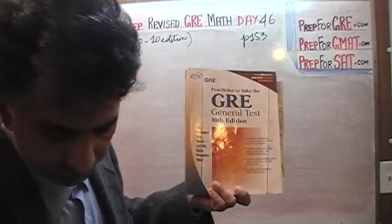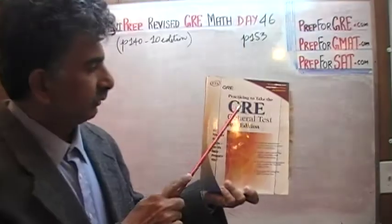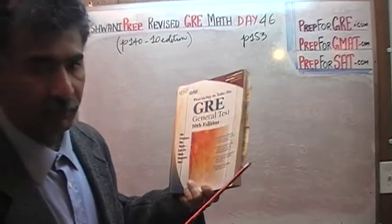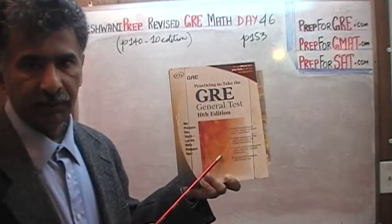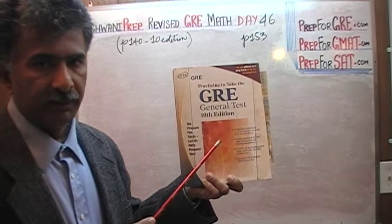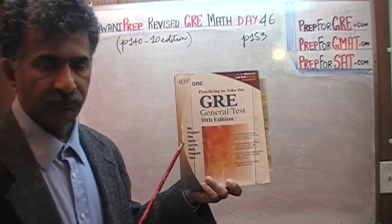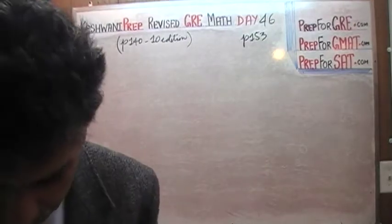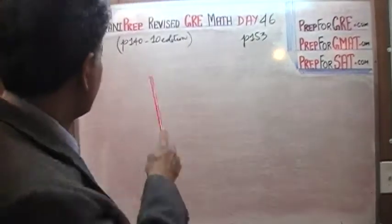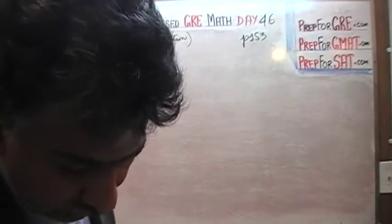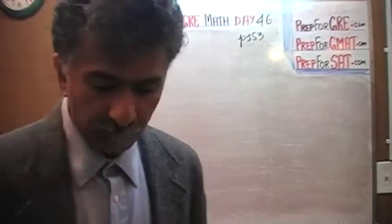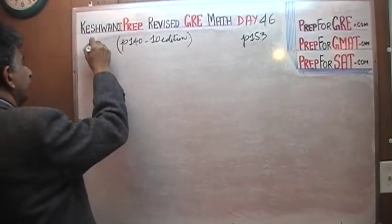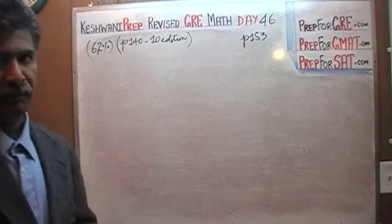This book is called 'Practicing to Take the GRE General Test,' the 10th edition. It contains seven exams based on the old GRE, and some questions have been taken from this book and repeated in your book, or are very similar. The question from page 140 of the 10th edition qualifies as an easy question — 62% of people had no trouble with it.